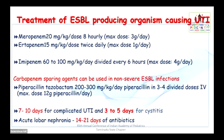For ESBL-producing organisms, according to up-to-date guidelines, carbapenem agents — meropenem, ertapenem, or imipenem — are recommended. In our practice, however, we use carbapenem-sparing agents in non-severe ESBL infection, such as piperacillin-tazobactam 200–300 mg/kg/day in 3–4 divided doses, when sensitivity pattern supports it. Duration of treatment is 7–10 days for complicated UTI and 3–5 days for cystitis. For acute lobar nephronitis, duration increases to 2–3 weeks. If abscess is suspected, CT abdomen may be needed and drainage should be done.